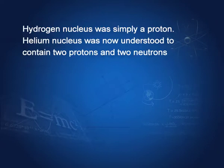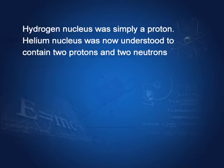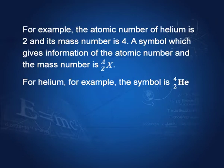The hydrogen nucleus is simply a proton. The helium nucleus contains two protons and two neutrons. The number of protons in the nucleus determines the chemical properties of the atom — it is called the atomic number, denoted by Z. The total number of nucleons, protons plus neutrons, is called the mass number, denoted by A. For example, helium is represented as He with mass number four and atomic number two.